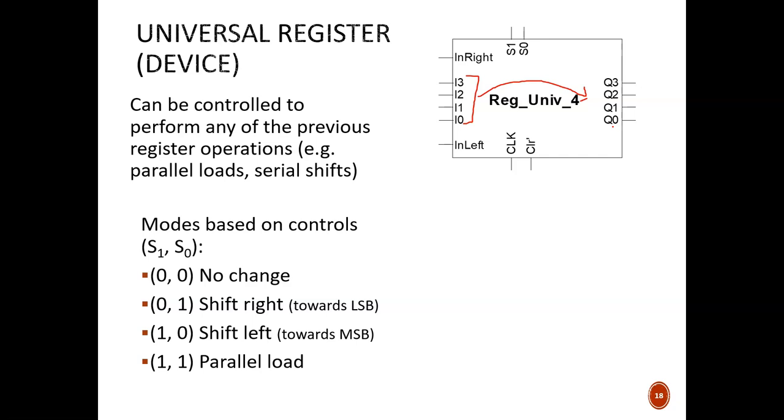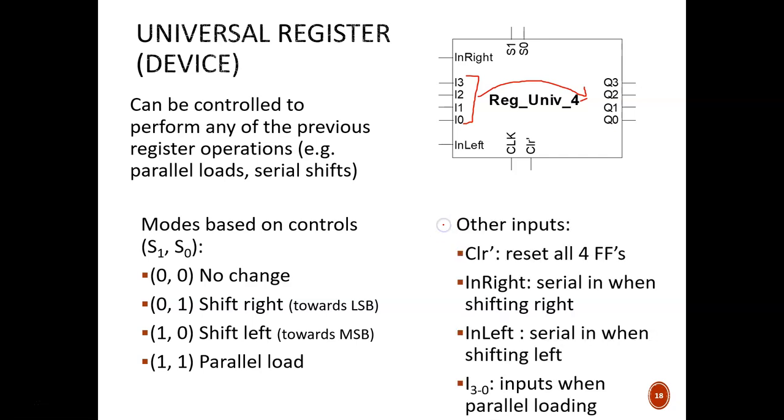Contrast that with the Serial In, Serial Out register shown last video, in which we could only see one output bit. The other inputs to this device, besides S1 and S0, are summarized here. When this asynchronous CLEAR is activated, with a zero, all of the Q values immediately go to zero. The InRight and InLeft ports are only useful during their corresponding shift modes. When shifting right, for example, the 1 or 0 at InRight will be shifted into Q3. Meanwhile, InLeft will go nowhere. When shifting left, it is InLeft that matters, but not InRight. In this case, the value at InLeft will be shifted into Q0.